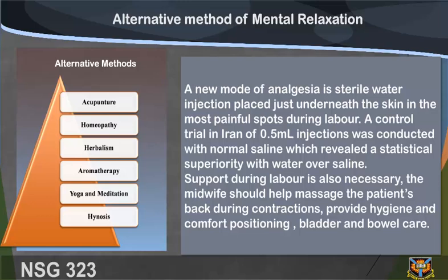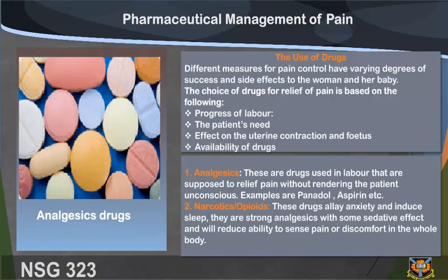The midwife should help massage the patient's back during contractions, provide hygiene and comfort positioning, and bladder and bowel care. Pharmaceutical management of pain — use of drugs: different measures for pain control have varying degrees of success and side effects to the woman and her baby. The choice of drugs for relief of pain is based on the progress of labor, the patient's needs, effect on uterine contractions and the fetus, and availability of drugs.